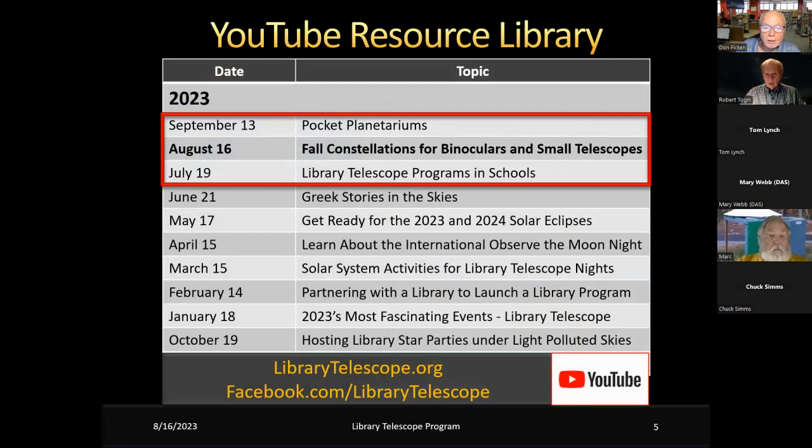John Goss is one of our members and does a wonderful job. Last month we did a program on Library Telescope programs in schools. Schools are getting more active in this. This month we have the fall constellations for binoculars and small telescopes. Next month we have a program on Pocket Planetariums.